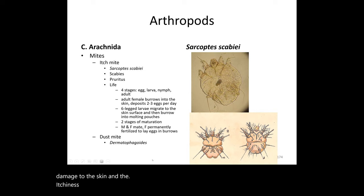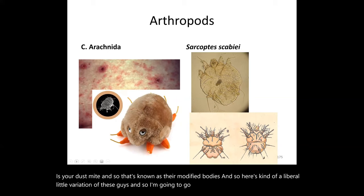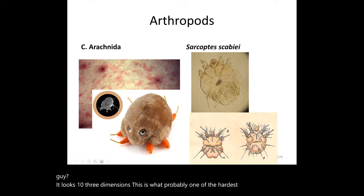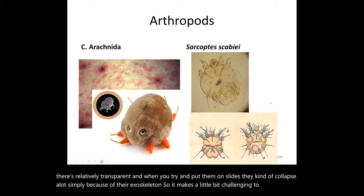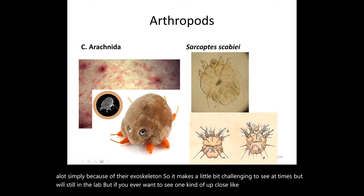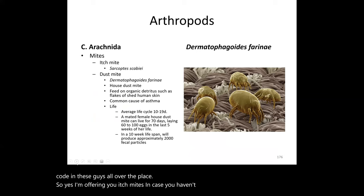That was your classic itch mite. The other arachnid you should know is the dust mite, Dermatophagoides. These are relatively transparent and tend to collapse on slides due to their exoskeletons, making them somewhat challenging to visualize. They're extremely common — you'll find them on carpets, couches, beds, curtains, and towels.